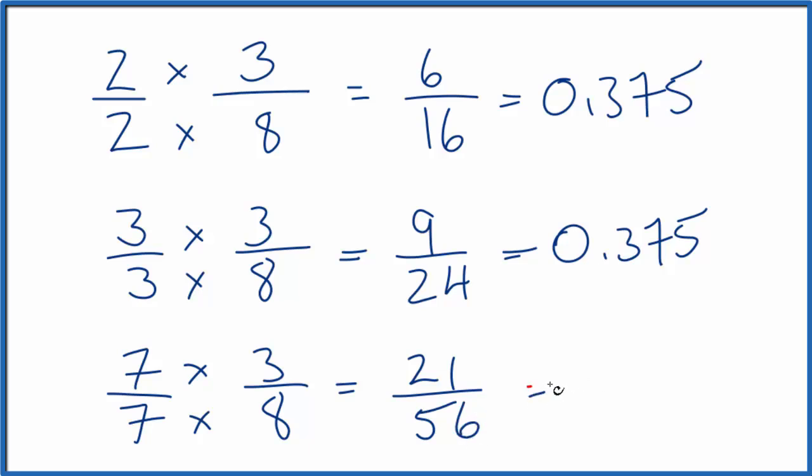That's another equivalent fraction for three eighths. And if you divide 21 by 56, you get 0.375, just like these other equivalent fractions for three eighths. This is Dr. B. Thanks for watching.